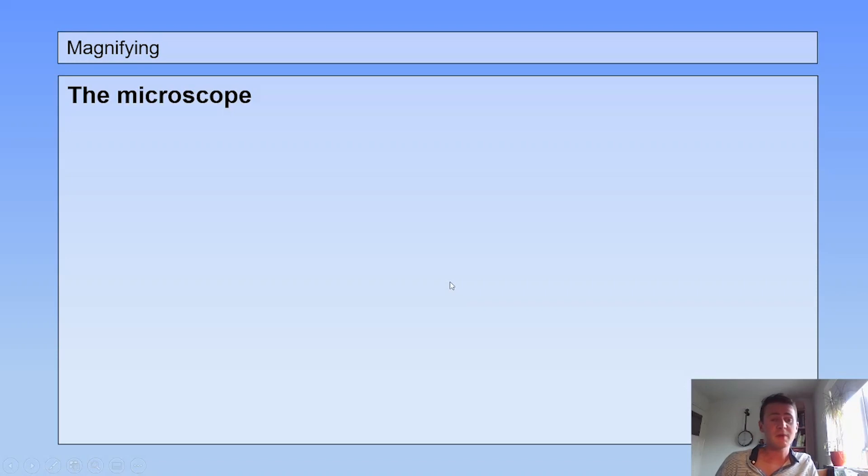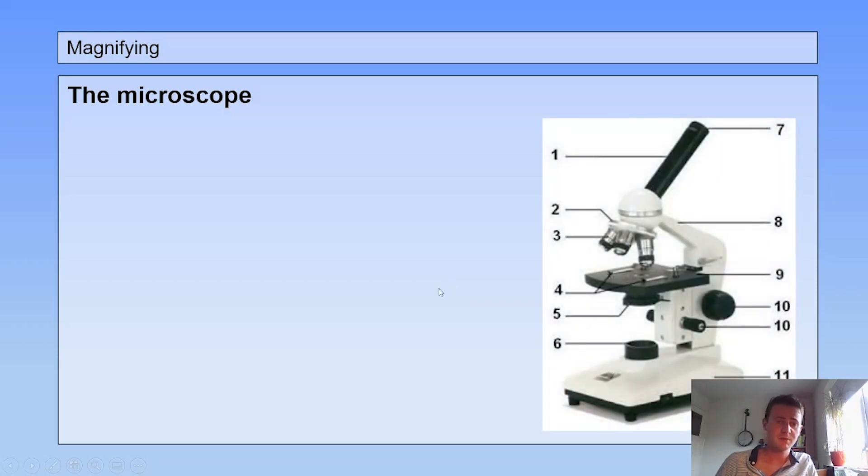The microscope. I will just list the names of the parts of the microscope. Number one is the tube, number two the revolving nosepiece, and with the revolving nosepiece you can change the different objectives.